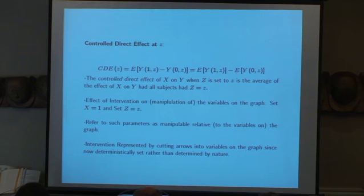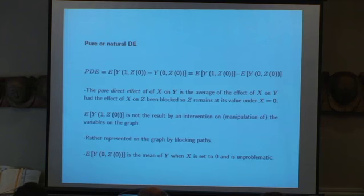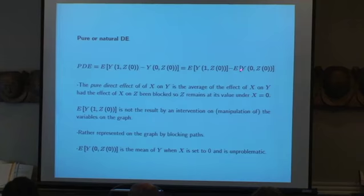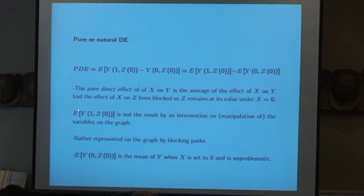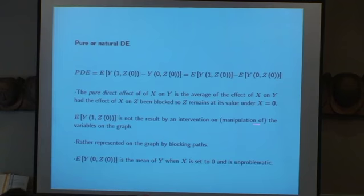Now there's another direct effect, and that's what this talk is about. It's called the pure direct effect. The pure direct effect of X on Y is the average of the effect of X on Y had the effect of X on Z been blocked. So Z remains as its value under X equals zero. I'm going to take your Y when I put X equal to one, but I'm going to give you the value of Z you would have had when you had X equals zero. And likewise, I'm going to give you zero and give you the value of Z you would have had when X equals zero.